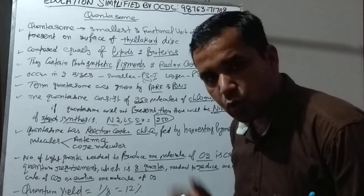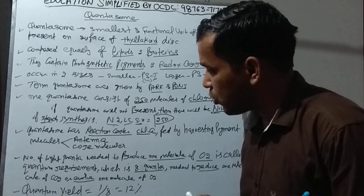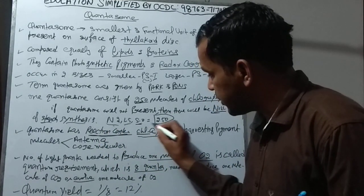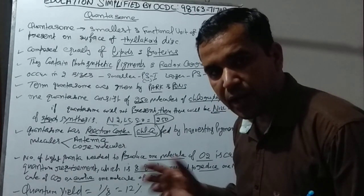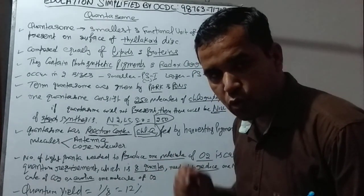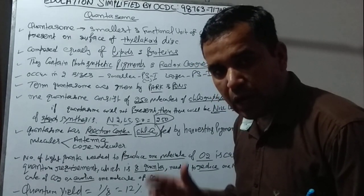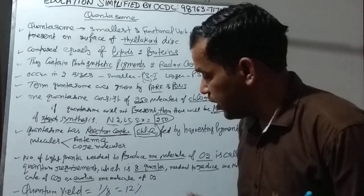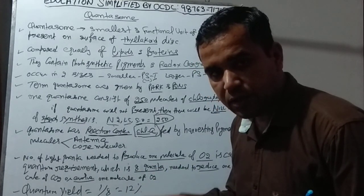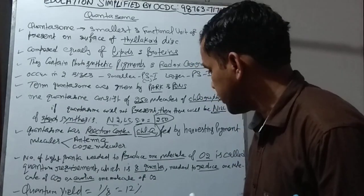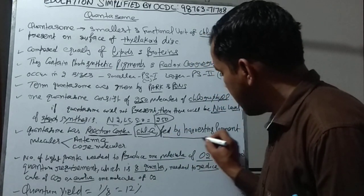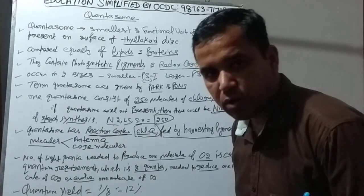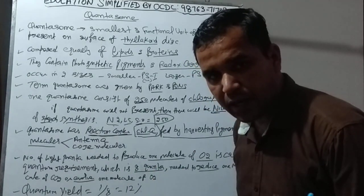So 250 molecules of chlorophyll come together to form one quantasome. Now, what is inside the quantasome? There is a reaction center inside the quantasome, and that reaction center is chlorophyll A. This means all the other chlorophyll pigments absorb light energy and pass it on to chlorophyll A, because chlorophyll A is the reaction center. The other pigments are called harvesting pigment molecules.